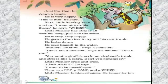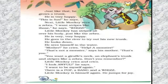Then the little monkey sees a zebra. Aap logon ko pata hai zebra ke paas kya hota hai — uske paas stripes hote hain. So yeh little monkey ne kya wish ki ki agar mere paas zebra jaise stripes hote. So the little monkey got zebra-like stripes too, with the help of the magic stick given by the wise woman. You can see here — uske paas magic stick hai.